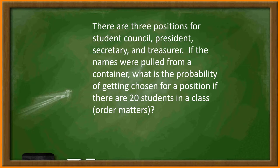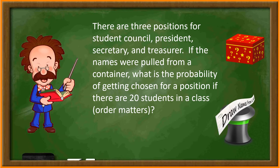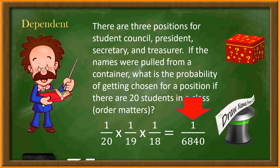There are three positions for student council: president, secretary, and treasurer. If the names were pulled from a container, what is the probability of getting chosen for a position if there are twenty students in a class? Since a person is placed into a position, he or she cannot be selected again for another office. The event is dependent. The probability of selecting a president is one out of twenty. The probability of selecting a secretary is one out of nineteen, and the probability of selecting a treasurer is one out of eighteen, since two have already been placed into positions. So the answer will be one twentieth times one nineteenth times one eighteenth, which is one over 6840.